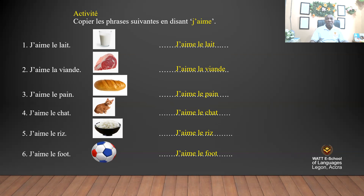Let's read the sentences one more time. J'aime le lait — I like milk. J'aime la viande — I like meat. J'aime le pain — I like bread. J'aime le chat — I like cats. J'aime le riz — I like rice. J'aime le foot — I like football.